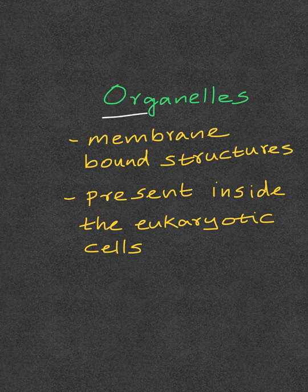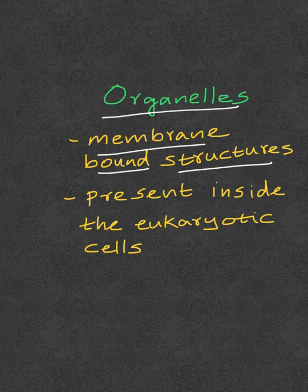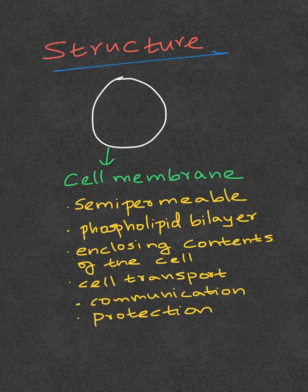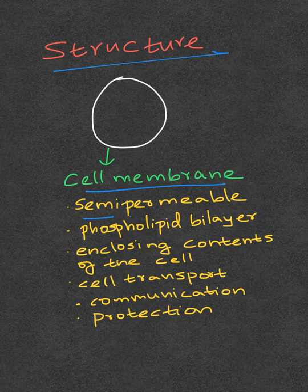Organelles are structures that are bound by a membrane, and these are present inside the eukaryotic cells. The basic structure of all eukaryotic cells is almost the same — they are all bound by a cell membrane, and this cell membrane is semi-permeable.